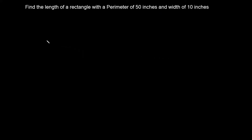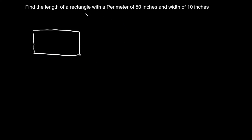The first thing you always want to do is draw a picture because that's gonna clear up a lot of things. So we're talking about a rectangle, so let's draw a rectangle. What do we know? It says it has a perimeter of 50 inches, so we know the perimeter is equal to 50 inches and we know the width is 10 inches.